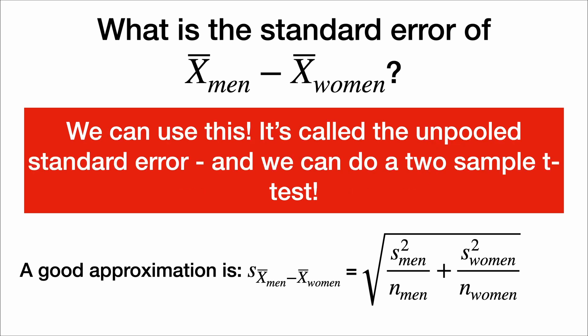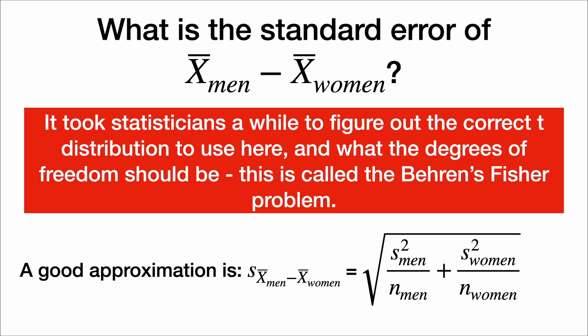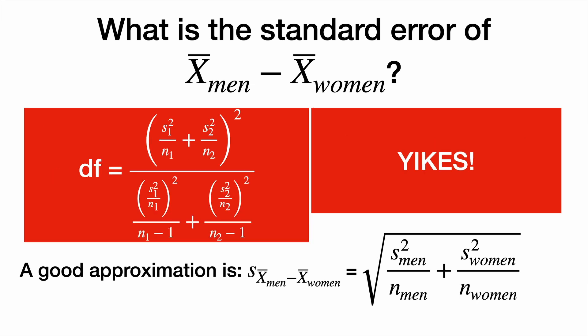It's called the unpooled standard error, and we can do a two-sample unpooled t-test. It took statisticians a little while to figure this out, how to use the t-distribution in this situation, and what the degrees of freedom should be. This is called the Behrens-Fisher problem. The degrees of freedom for this approximation is quite complicated. This means that an unpooled t-test is often done with statistical software because we don't want to compute this number ourselves.